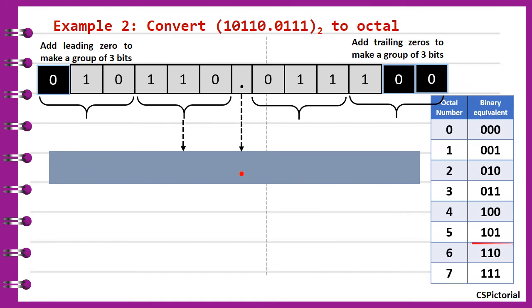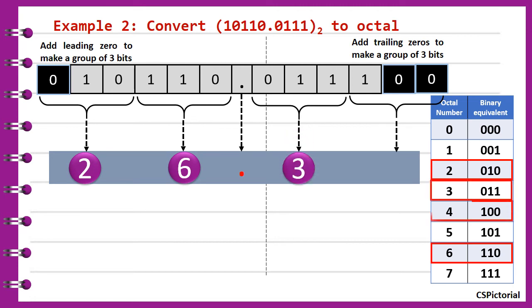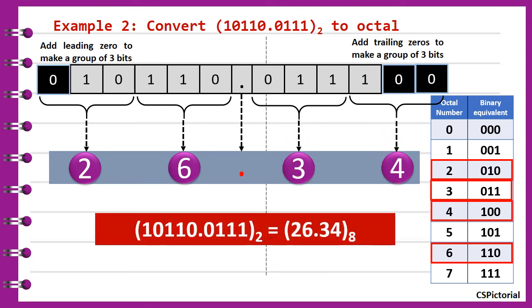Replace each group with the corresponding octal digit. The answer is 10110.0111 in binary equals 26.34 in octal.